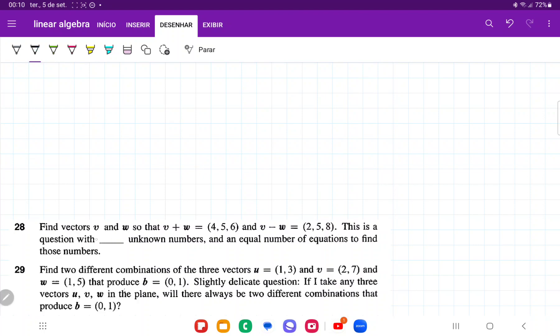This is a question with two unknown numbers because we're looking for v and w, and an equal number of equations to find those numbers. We have the first equation v plus w and the second equation v minus w.